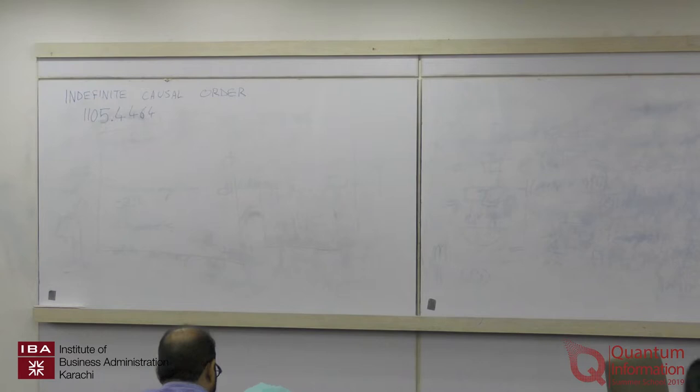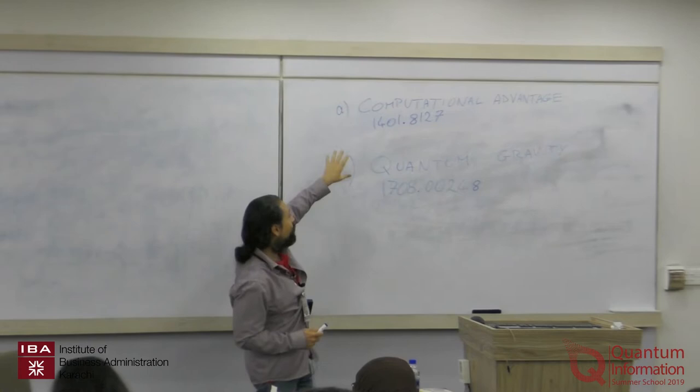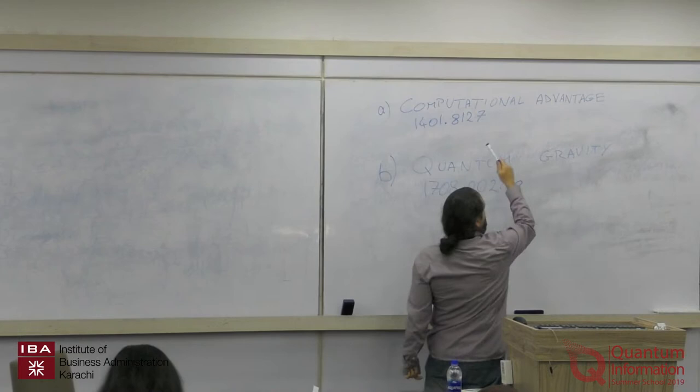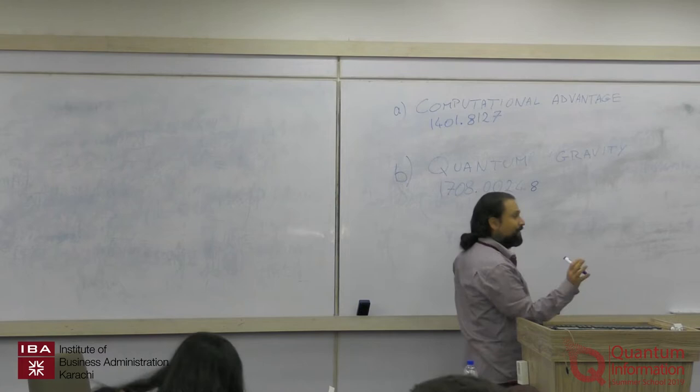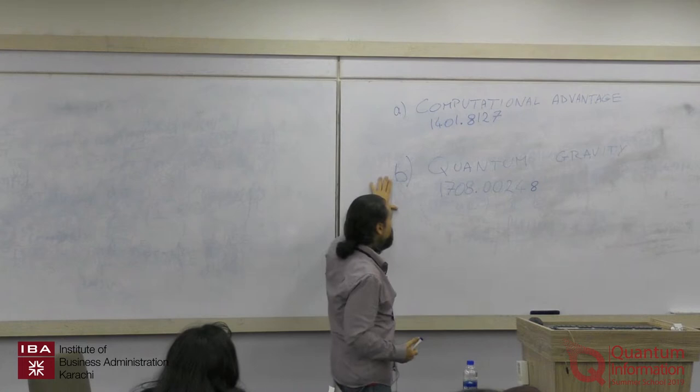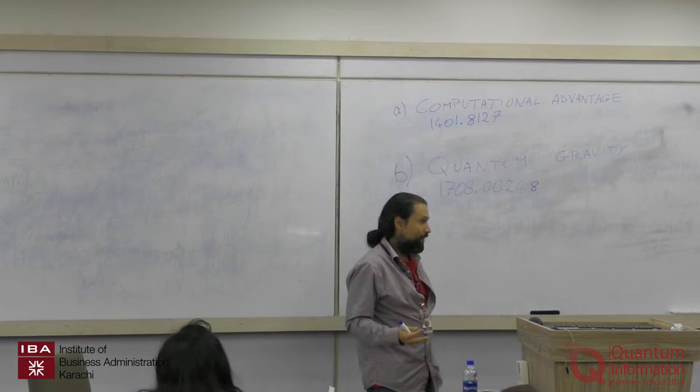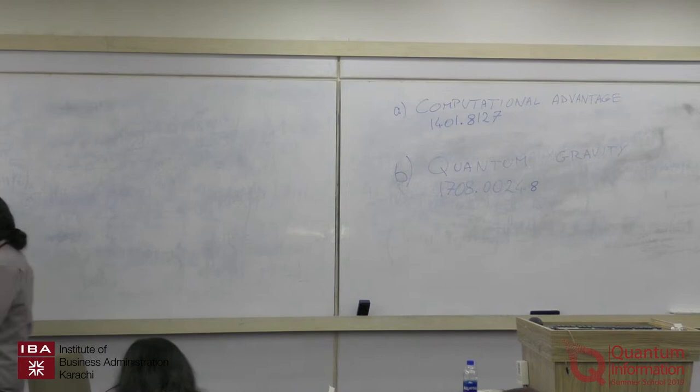As I announced yesterday, we will have an option to choose between two topics for how to end this lecture. One topic is how to use what I'll discuss today to draw some computational advantage — this has applications and there are experiments being performed right now. The second option is more foundational and has to do with quantum gravity. There will be nothing about the actual formalism of quantum gravity, but at the conceptual level how what I discuss can arise when gravity is not classical.